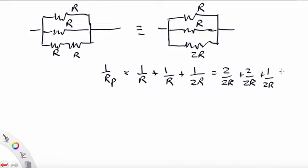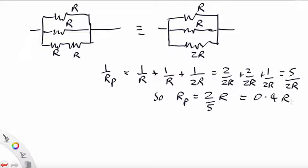So Rp itself which is the inverse of that is 2 fifths of R or 0.4 times R.